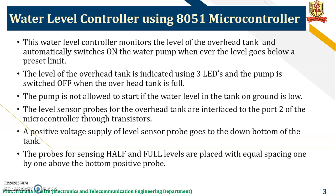The level sensor probes for the overhead tank are interfaced to port 2 of the microcontroller through the transistor. The positive voltage supply of the level sensor probes goes to the bottom of the tank. The probes for sensing half and full levels are placed with equal spacing, one by one above the bottom positive probe.